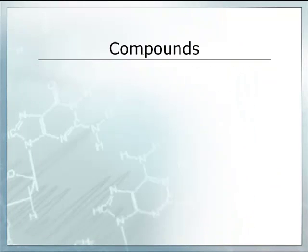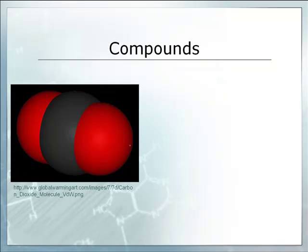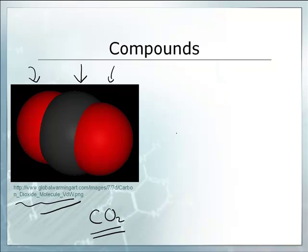Then we have this thing called a compound. And so this is sort of a diagram of a possible compound. Looks like we've got one atom in the middle, that kind of grayish colored one. And then we've got two out on the sides. I'm guessing that's probably carbon dioxide. Yeah, it is. Oh, hey, look at that in the URL there. It says carbon dioxide. So it's CO2.